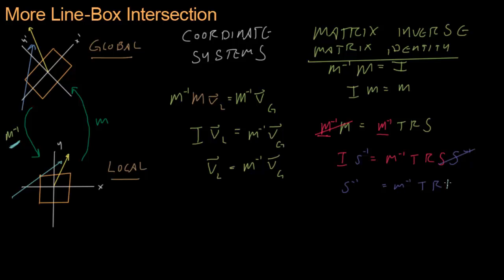Now let's get rid of R by multiplying both sides times R inverse. So this R and this R inverse cancel out and you have S inverse R inverse equals M inverse T. And now M inverse is almost alone by itself. We only have one thing left to do and we're going to multiply times T inverse.